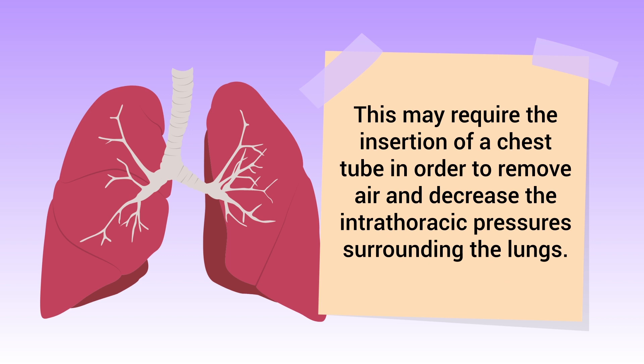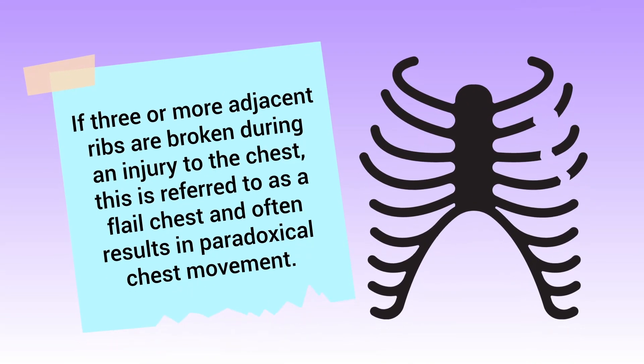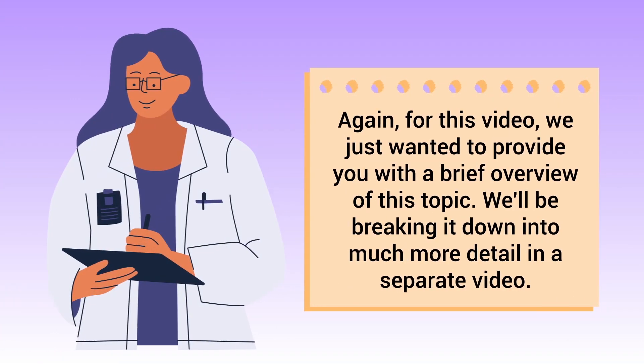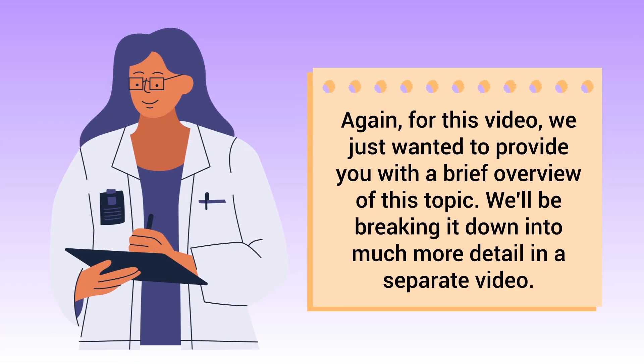If three or more adjacent ribs are broken during an injury to the chest, this is referred to as a flail chest and often results in paradoxical chest movement. Again, for this video we just wanted to provide a brief overview of this topic — we'll be breaking it down into much more detail in a separate video.